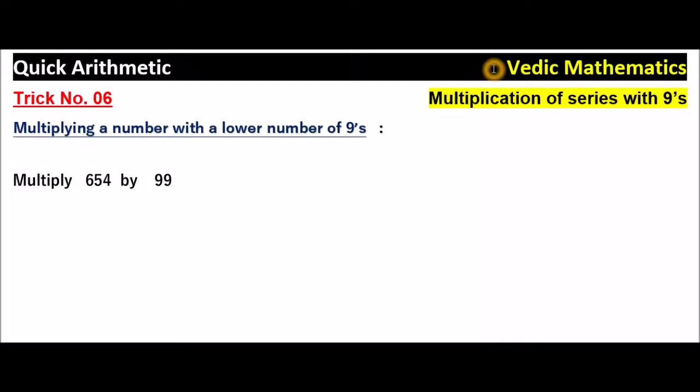Vedic Mathematics, this is trick number 6: Multiplication of series with 9's. Multiplying a number with a lower number of 9's. The question is multiply 654 by 99. Just observe, 99 only has 2 digits, but the number 654 is 3 digits. So multiplying a number with a lower number of 9's.